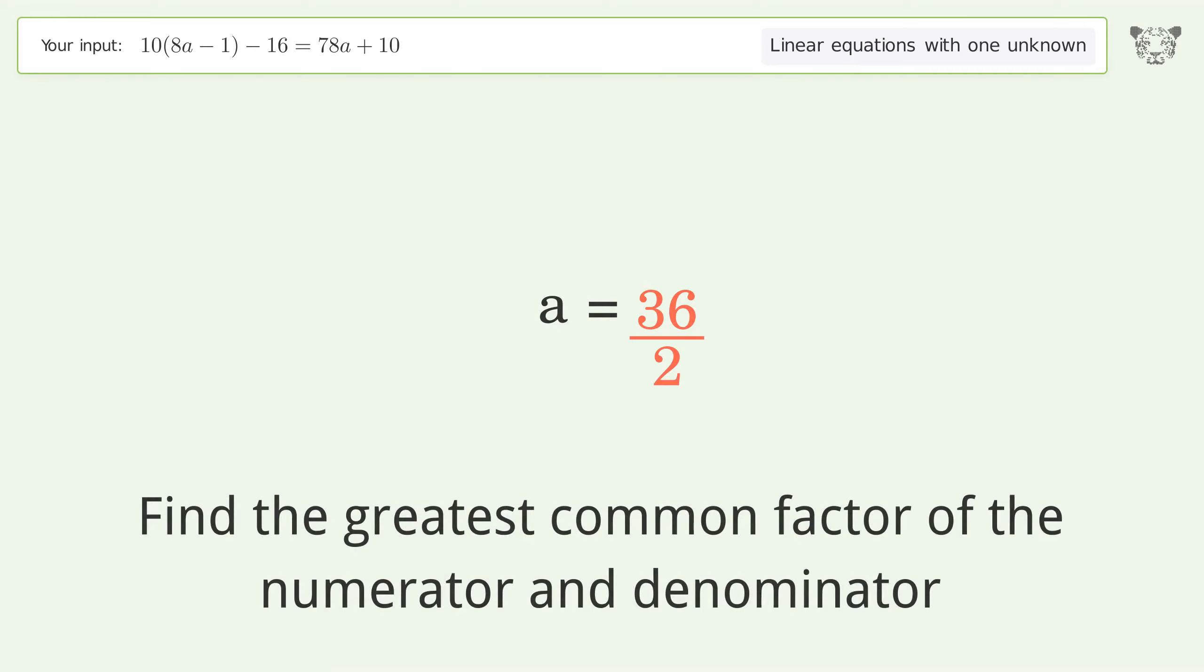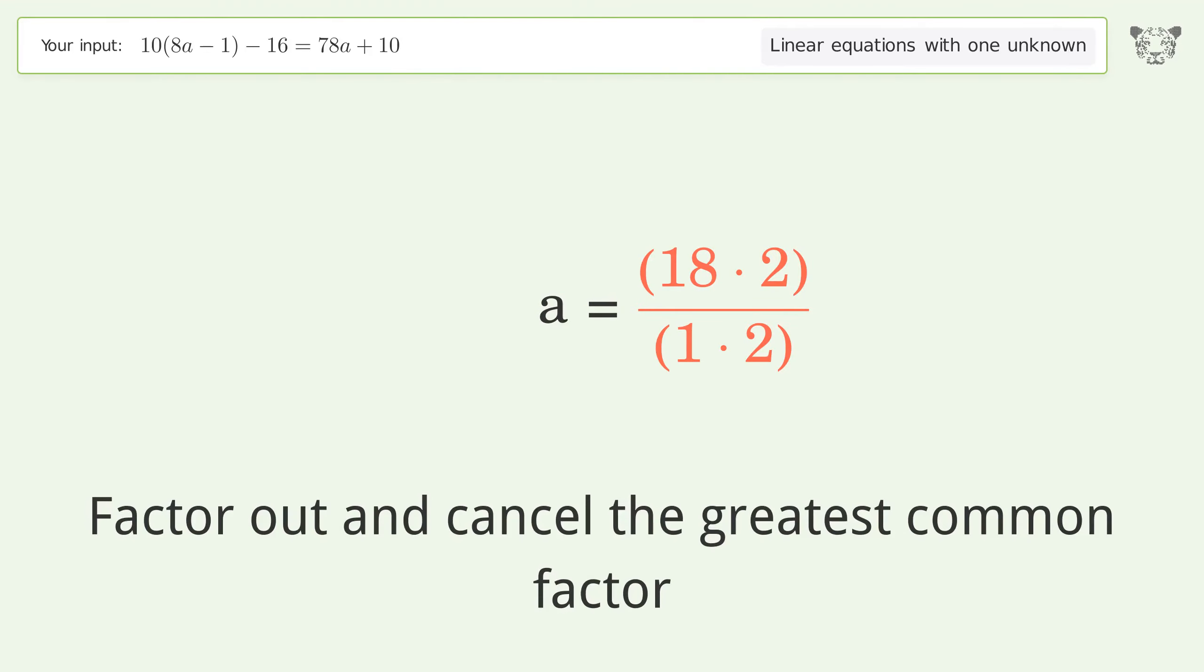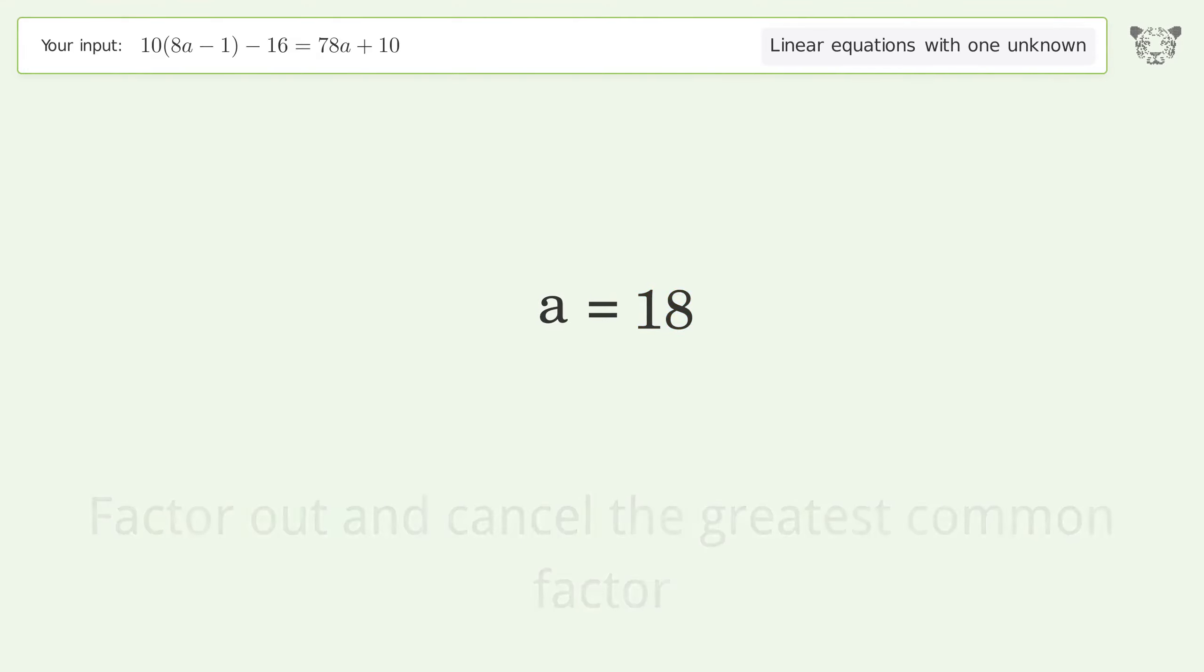Find the greatest common factor of the numerator and denominator. Factor out and cancel the greatest common factor. And so the final result is a equals 18.